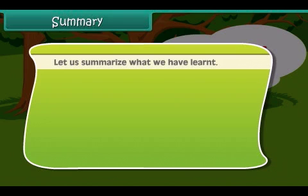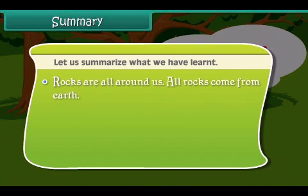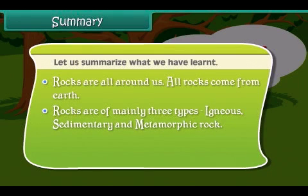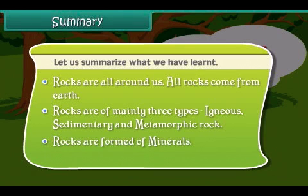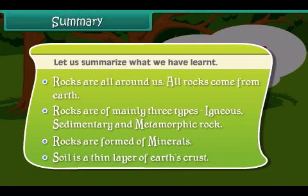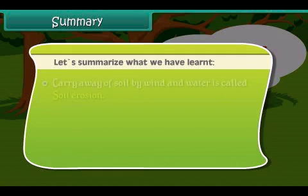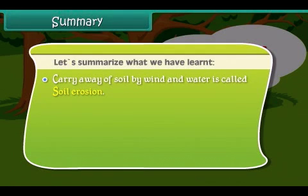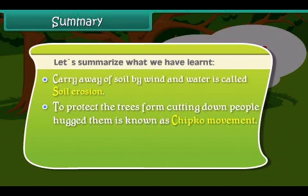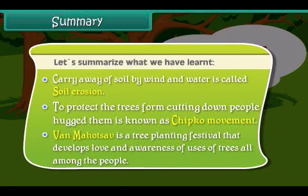Let us summarize what we have learned. Rocks are all around us and all rocks come from the earth. Rocks are mainly of three types: igneous, sedimentary, and metamorphic. Rocks are formed of minerals. Soil is a thin layer of the earth's crust. Carrying away of soil by wind and water is called soil erosion. People hugged trees to protect them from felling — this movement is known as the Chipko Movement. Van Mahotsav is a tree planting festival that develops love and awareness of the uses of trees among the people.